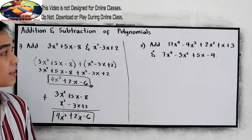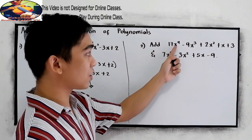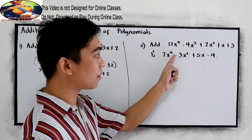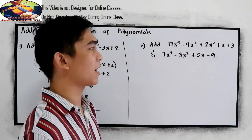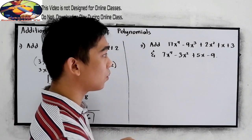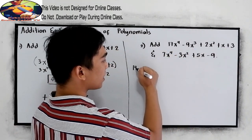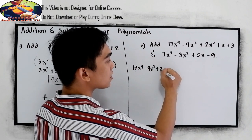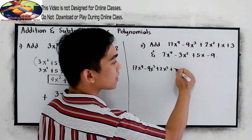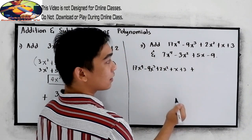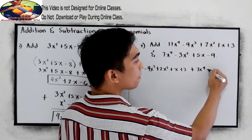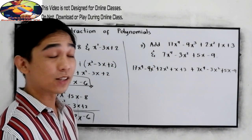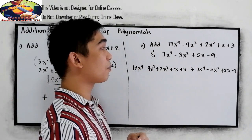Let's try another example. Add 17x raised to the 4th minus 9x cubed plus 2x squared plus x plus 3, and 7x raised to the 4th minus 3x squared plus 5x minus 9. Since our operation is addition, we can just copy the first polynomial, then add the second. It's okay not to write the parentheses if our operation is addition.